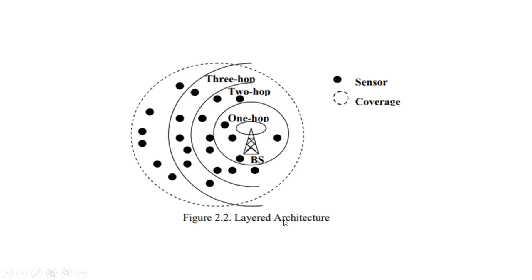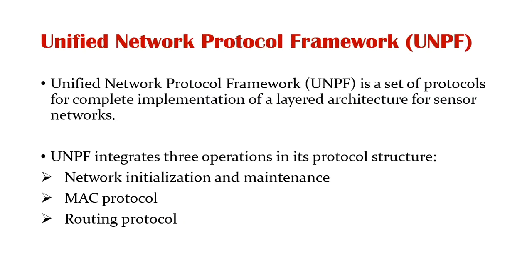The advantage of layered architecture is that each node is involved in a short distance so that there is low power consumption here. In layered architecture, the protocol used here is UNPF, that is Unified Network Protocol Framework. Unified Network Protocol Framework is a set of protocols for complete implementation of layered architecture for sensor networks. UNPF integrates three operations: network initialization and maintenance, MAC protocol, and routing protocol.